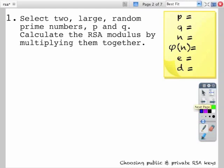So the first thing to do is to select two large random prime numbers p and q. Our numbers will be small. We're going to calculate the RSA modulus by multiplying them together.